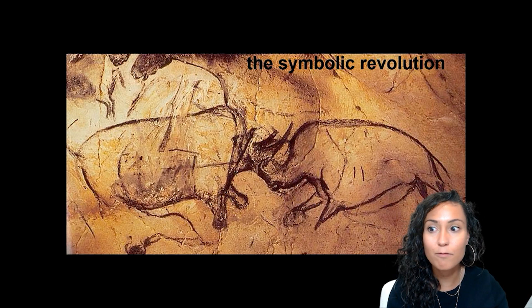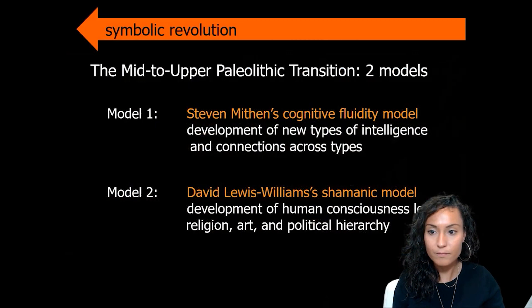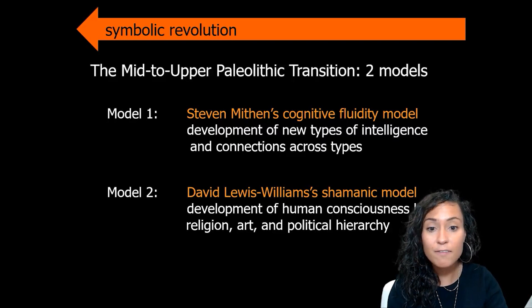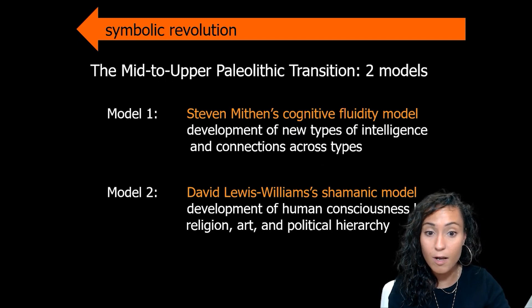Welcome to the Symbolic Revolution during the Paleolithic period in Europe. Let's return to our two models for the development of behaviorally modern humans. As discussed in Lecture 2.2, Stephen Mithen argued that the development of new types of intelligence and connections across these types of intelligence is what led to the Symbolic Revolution.